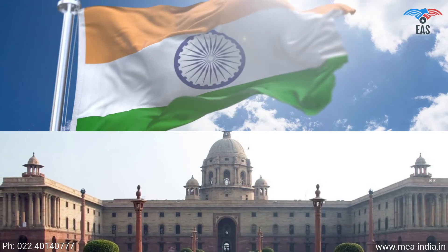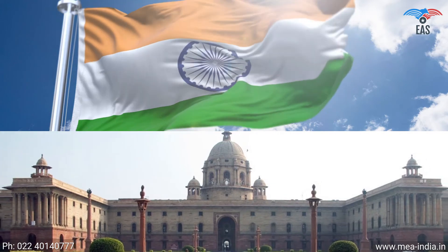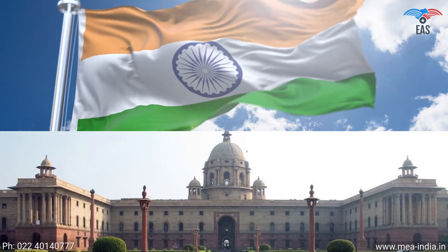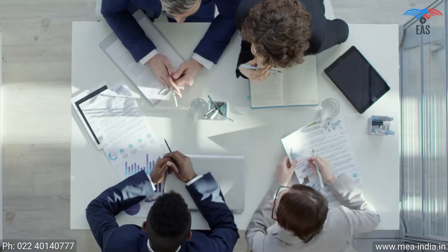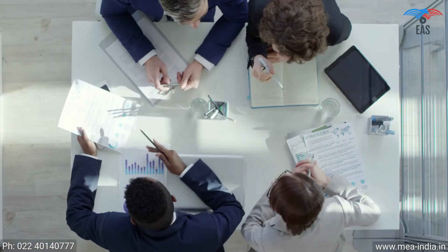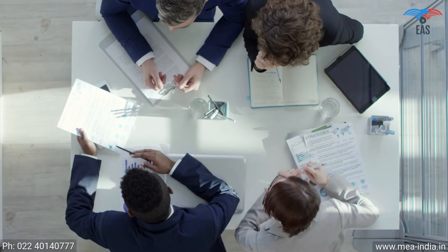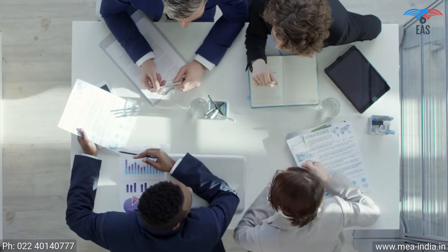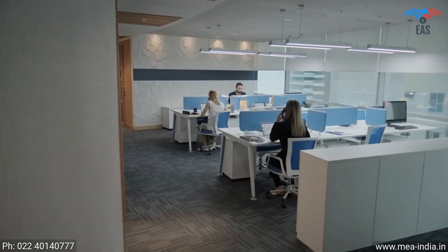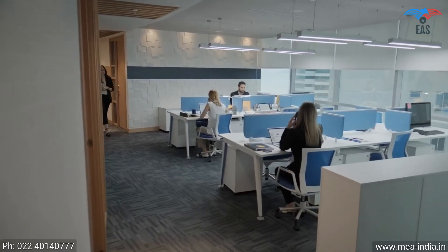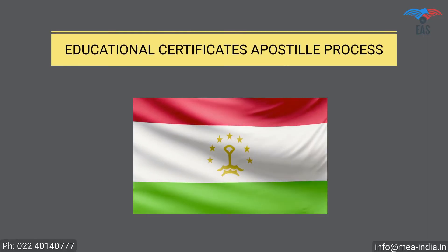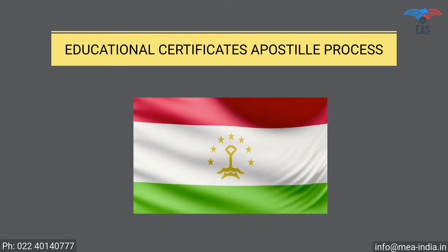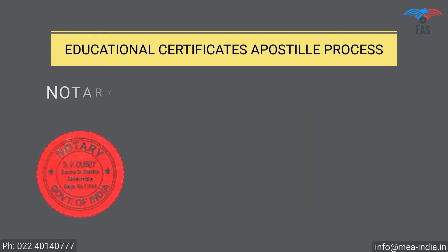All three kinds of documents mentioned could be legalized from the Ministry of External Affairs. To reach the final apostille stamp, the document has to pass through some compulsory primary legalization processes from various authorized departments, which depends upon the kind of documents. Educational Certificate Apostille Procedure for Tajikistan — Step 1: Notary Attestation.